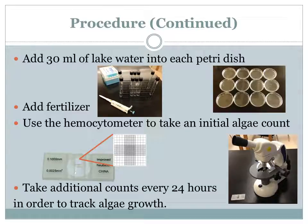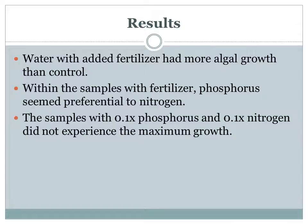Then, every 24 hours, I took another count of the algae to track its growth. I found that all the water samples with added fertilizer experienced more algae growth than those without. Within the samples with added fertilizer, increased phosphorus led to more algal growth than increased nitrogen.